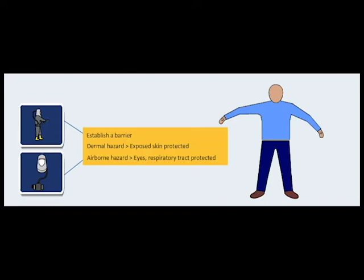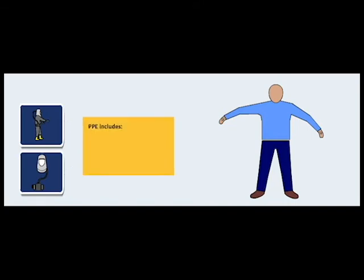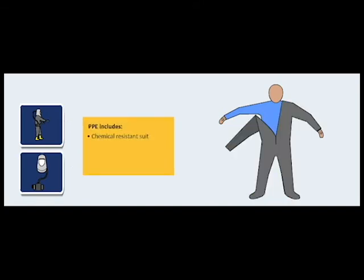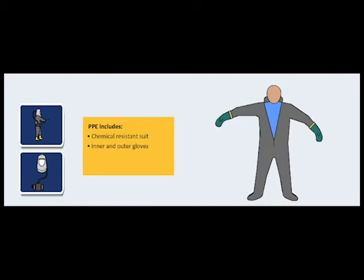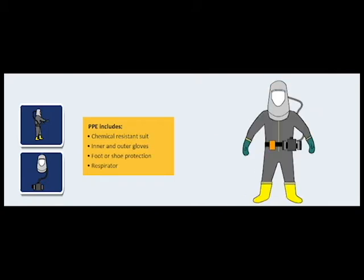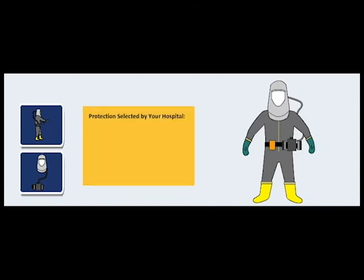In some cases, PPE typically includes a chemical resistance suit, inner and outer gloves, foot or shoe protection, and a respirator. This gear is designed to work in unison to shield an individual from chemical, biological, radiological, or physical hazards. Your hospital has selected equipment for your use and it should provide adequate protection as long as it is worn and used appropriately.